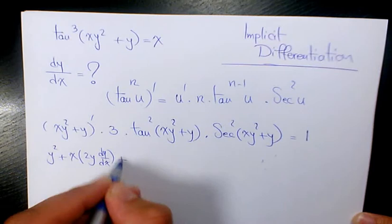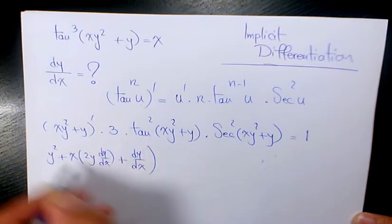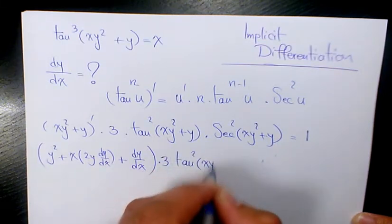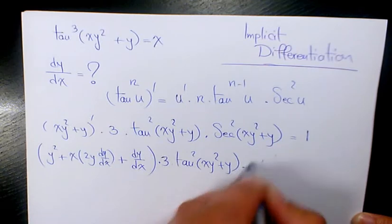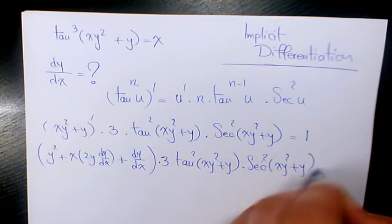Plus the derivative of y, which is dy/dx, times 3 times tan² of (xy² + y) times secant² of (xy² + y) equals 1.